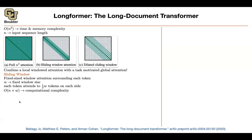We also learned about dilated convolution. You can borrow ideas from dilation and pay attention to every other key, skipping by one while paying attention. This way, you are increasing the field of view of the attention mechanism, and you will be able to process longer sentences and look further into the past or into the future.